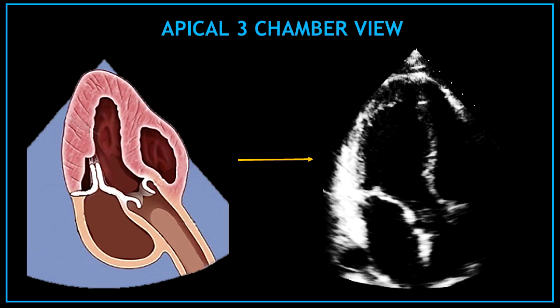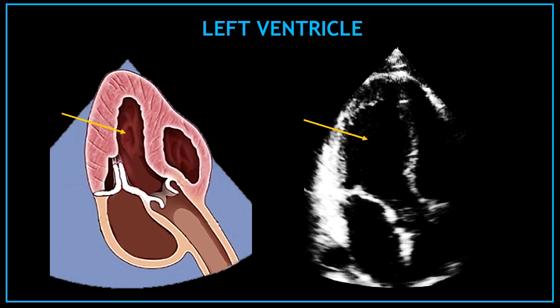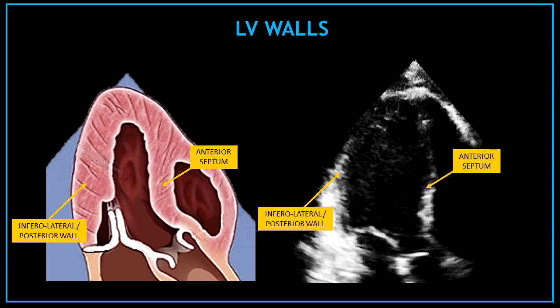And to finalize, this is the apical 3 chamber view, and I'm going to show you all the structures visualized here. The apical 3 chamber view is very similar to the parasternal long axis view. Let's start with the left ventricle, which is that big chamber at the top of your screen. The left ventricular walls visualized in this view are the inferolateral or posterior wall on your left hand side and the anterior septum in the middle of the screen.